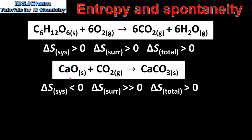The next reaction is between solid calcium oxide and carbon dioxide gas to produce solid calcium carbonate. The entropy change of the system is negative because 1 mole of gas and 1 mole of solid produce 1 mole of solid. However, because this is an exothermic reaction, heat released increases the entropy of the surroundings, making the total entropy change positive and the reaction spontaneous.